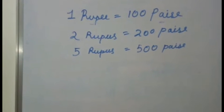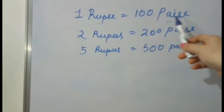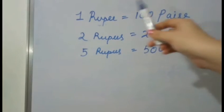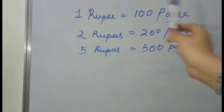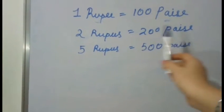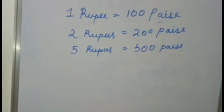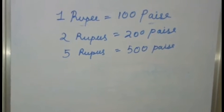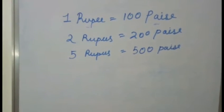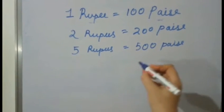We all know that the bigger unit of money is rupees and the smaller unit of money is paise. 1 rupee equal to 100 paise. 2 rupees equal to 200 paise. 5 rupees equal to 500 paise. This is like if you want to convert rupees to paise. What to do? We have to simply multiply with 100.